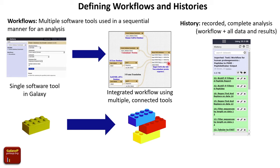One thing you're going to hear a fair amount about today is workflows and histories. As analyses become more and more complex, they go from a single software tool to needing multiple software tools. Those tools need to be chained together so the output from one acts as the input for a subsequent tool. Ideally, you develop an integrated workflow where input data goes through this workflow in an automated way — each subsequent tool takes in an input, produces an output that serves as input to the next tool — and ultimately you reach an end result you can export from or visualize on Galaxy.